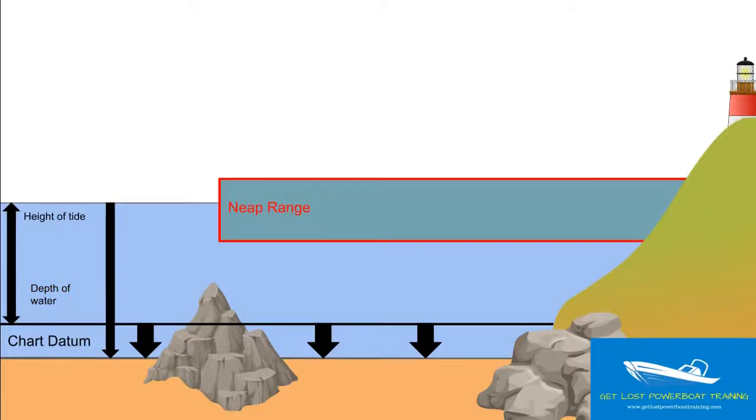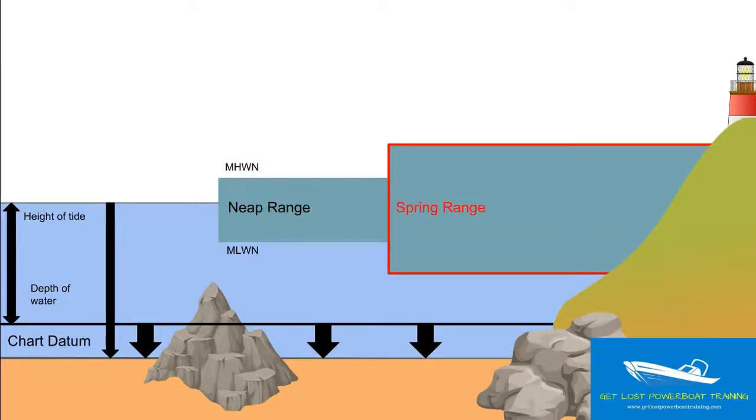The neap range is the difference between mean high-water neaps and mean low-water neaps. Mean high-water neaps is the average height of high water on a neap tide, and mean low-water neaps is the average height of low water on a neap tide.